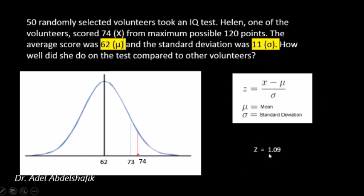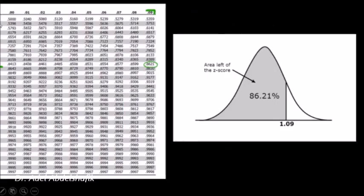Using the formula, she is located at 1.09 on this scale. Using standard Z-score tables, we look up 1.0 on one axis and 0.09 on the other and get a value of 86%. So this area represents 86%, meaning she is ranked at the 86th percentile. Using these tables, for any location we can tell how much of the population falls to the left of that point.